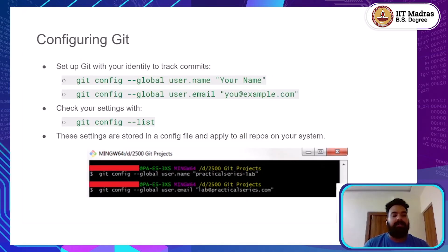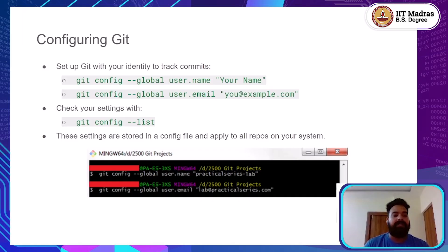After understanding these local operations, it is also important to learn how to configure Git with your identity. This is done with two simple commands. First, you set your username with git config --global user.name, and then your email with git config --global user.email. These settings ensure that every commit you make is correctly attributed to you. You can verify your settings at any time with git config --list, and these configurations apply globally to all repositories you work on.